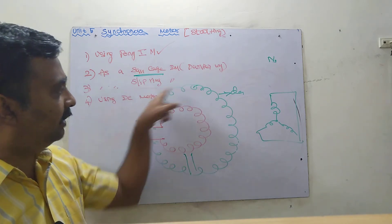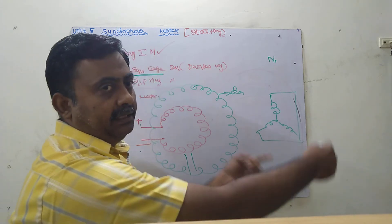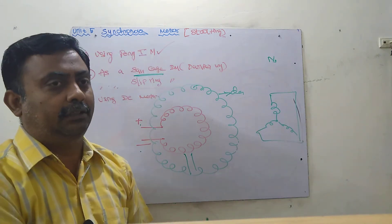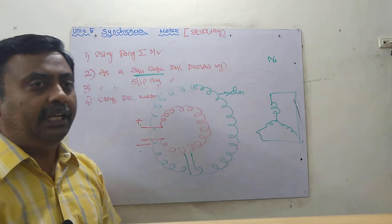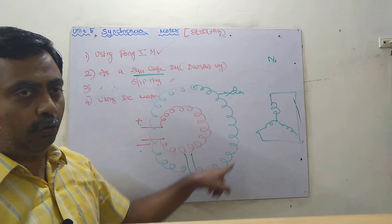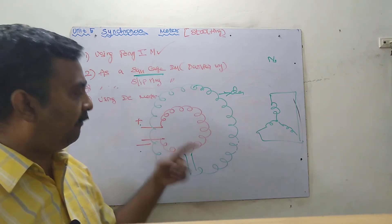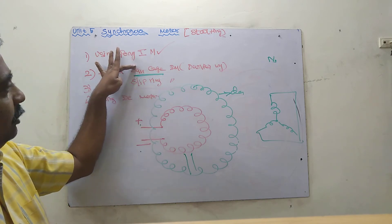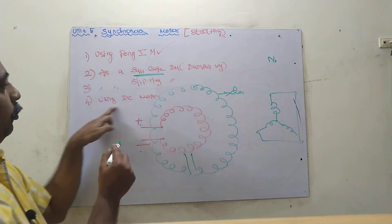The third method is starting as a slip ring induction motor. Instead of short-circuiting the damper windings inside the machine, the three windings are brought outside using slip rings. External resistance is added to increase the starting torque, since a squirrel cage motor has low starting torque. The concept is the same — the rotor runs at sub-synchronous speed, then DC supply is given and magnetic locking occurs.